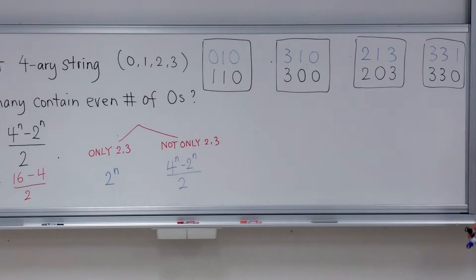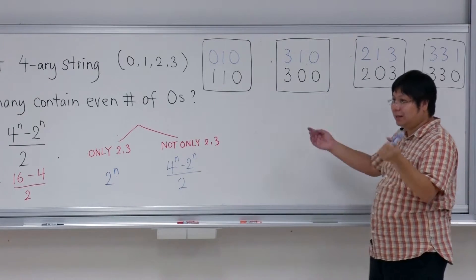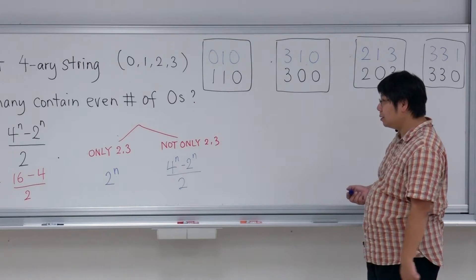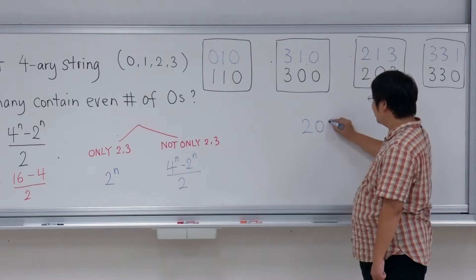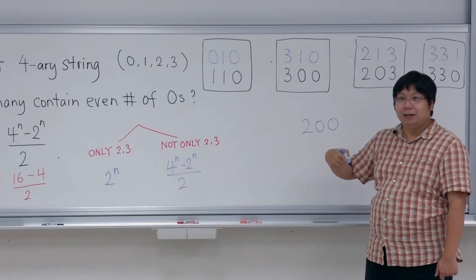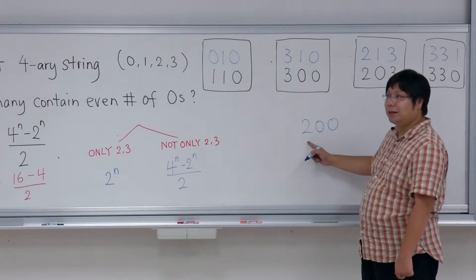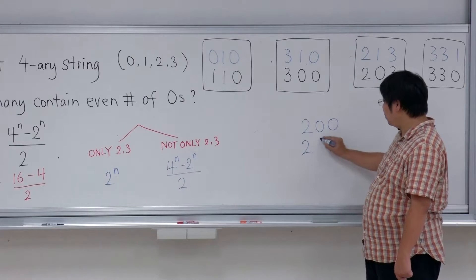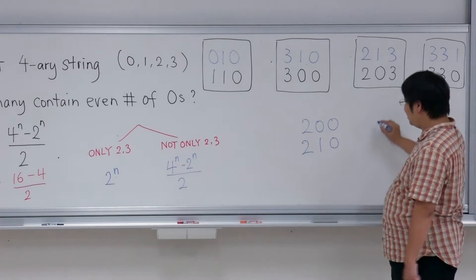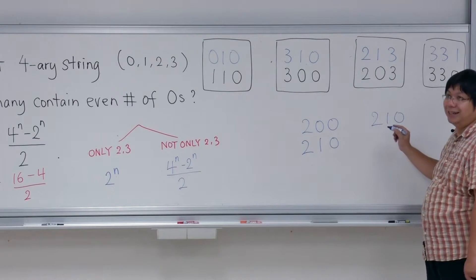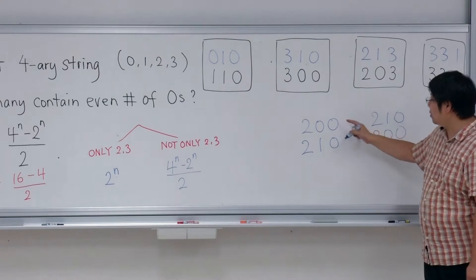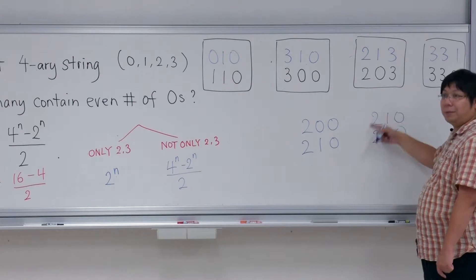Let's do one more example. How about 2-0-0? What should it correspond to? The answer is 2-1-0. And how about 2-1-0? It pairs with 2-0-0. So these two are paired together.